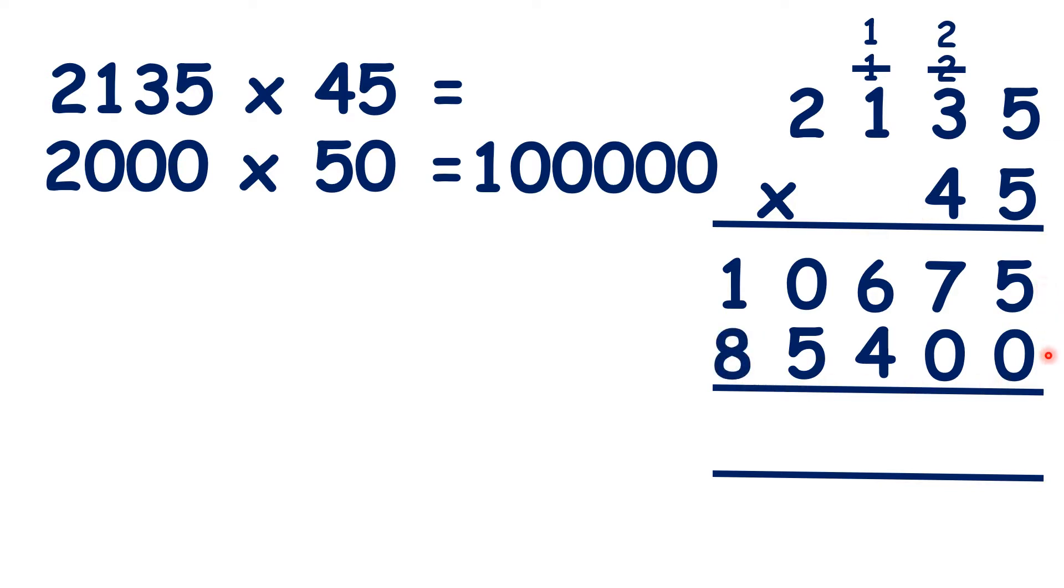So now, adding up our answer lines, 5 plus 0 is 5, 7 plus 0 is 7, 6 plus 4 is 10, 1 plus 0 plus 5 is 6, and 1 plus 8 is 9. So, our answer is 96,075.